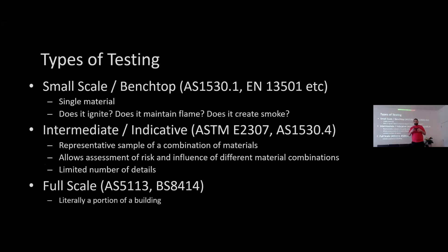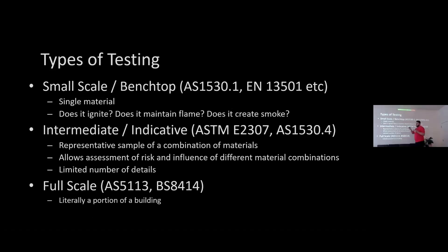Types of testing — there are three different ways to think about this: small scale tests, intermediate, and full scale. A small scale test is: I've got a product or material, I want to know if it's going to be combustible, light it on fire — that's a pretty easy test. Internationally there are five or six different machines you can use; they'll all give pretty similar results. Intermediate is where you take details or parts of walls, put combinations together, and test how that part of the wall works. Then full scale is where you build an actual building, light it on fire, and see how well it doesn't burn.